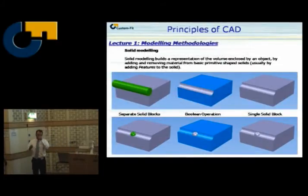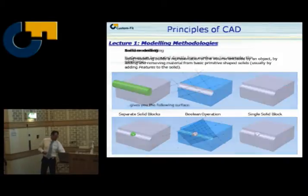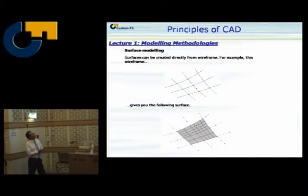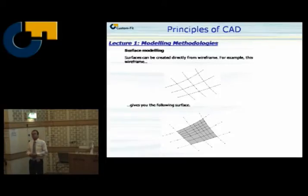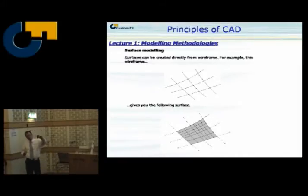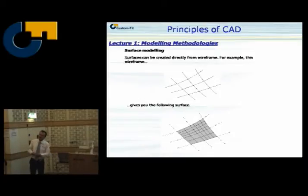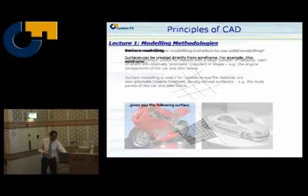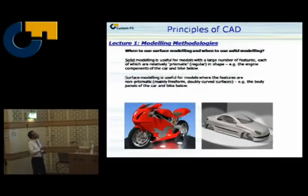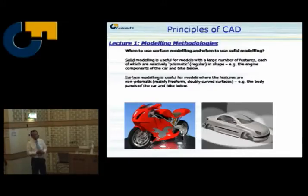Modeling methodologies. We saw a few of them already in the demonstration. Surface modeling is mainly used for making freeform surfaces, but for instance when you want to make an engine block, you can better use a solid modeling approach because it's about building parts and pieces together. When you look at a motorbike, the outside is well done with surface modeling, while the inside of the engine can be done very quickly with solid modeling.